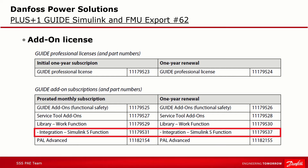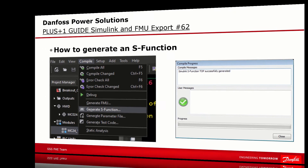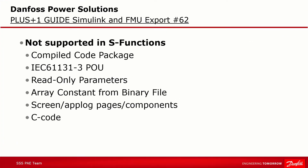To start Generate S-Function in Guide, as soon as you select Generate S-Function inside the Compile menu, an S-Function will be generated from the current page in Plus+1 Guide and automatically include any modules or sub-pages on that page. During conversion, the project will be extracted and partially compiled with a simulated HWD system file. Since the S-Function is linked with the MATLAB installation path, it will be invoked and the S-Function created. In general, all features of Plus+1 Guide are supported, however a number of exceptions are not supported, such as Compile Code Package, IEC 61131-3, PURU language, and read-only parameters.